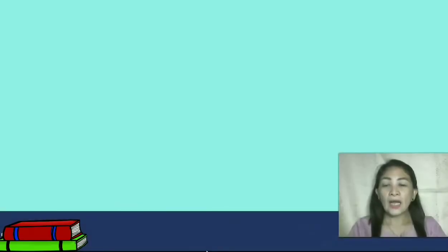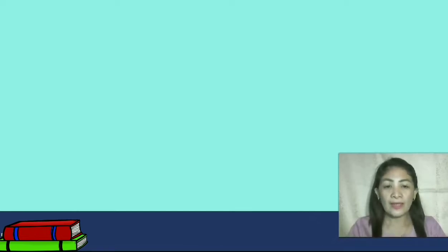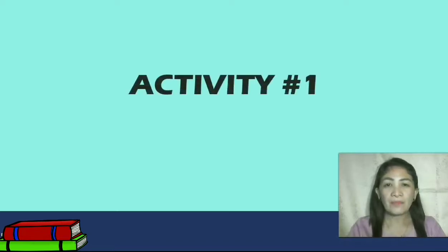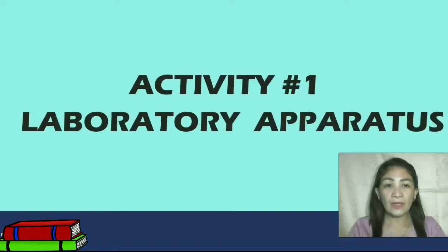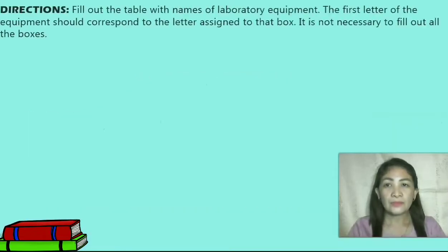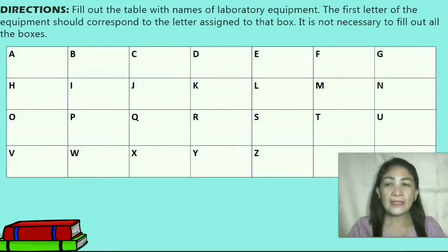And now, let's start this activity and see how far you've learned from our previous lesson. This can be used during our Science Laboratory Experiment. The title of our activity number 1 is Laboratory Apparatus. Directions: Fill out the table with the names of laboratory equipment. The first letter of the equipment should correspond to the letter assigned to that box.